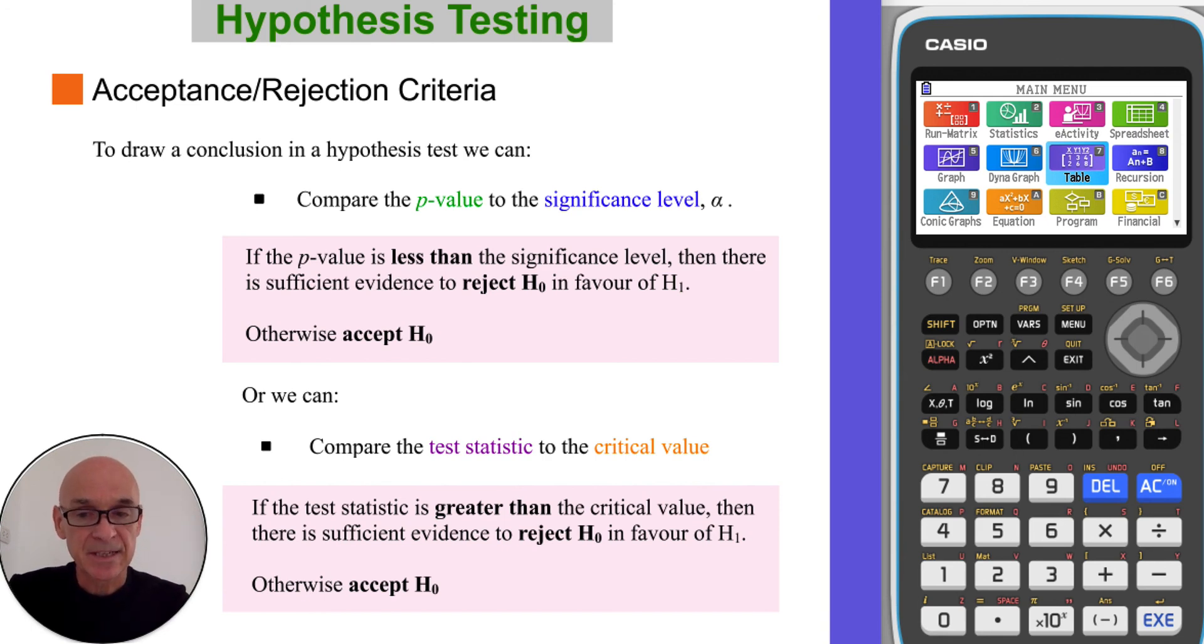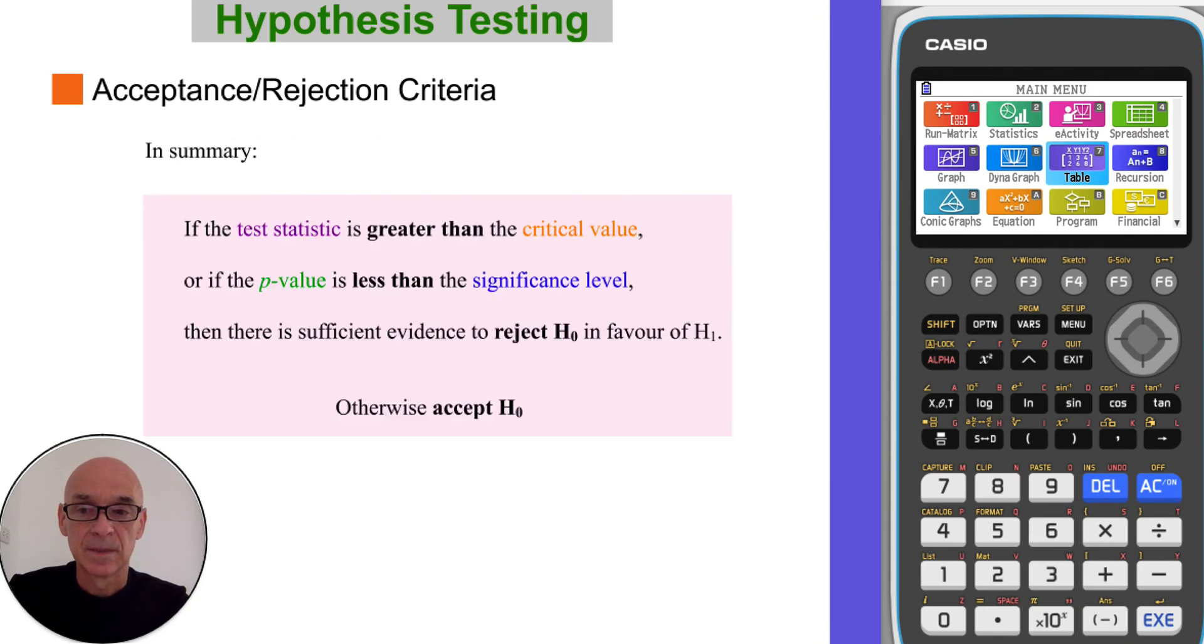Alternatively, we can compare the test statistic to the critical value if we're given the critical value in the question. And if the test statistic is greater than the critical value, then again, there is sufficient evidence to reject the null hypothesis. And now onto the final step, step six. In summary, if the test statistic is greater than the critical value, or if the p-value is less than the significance level, then there is sufficient evidence to reject the null hypothesis.